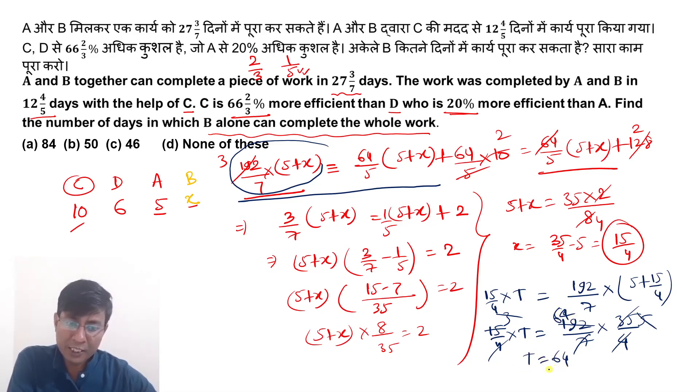So from here t value you'll get is 64. So our answer is option D, none of these. I hope you understood. First learn to convert ratio to percentage and percentage to ratio, analyze relative values.